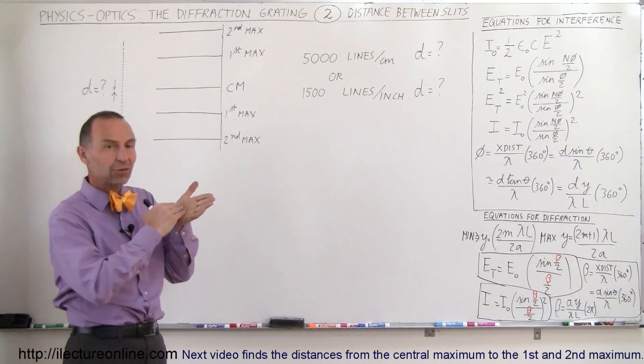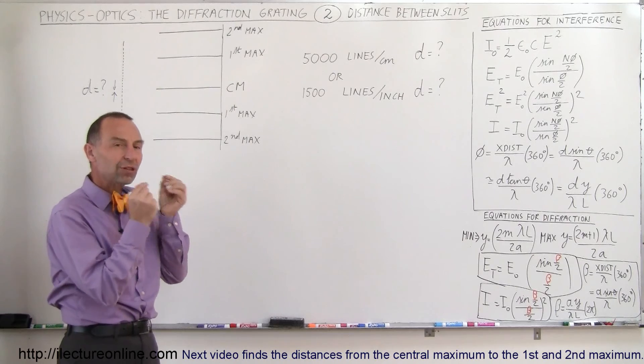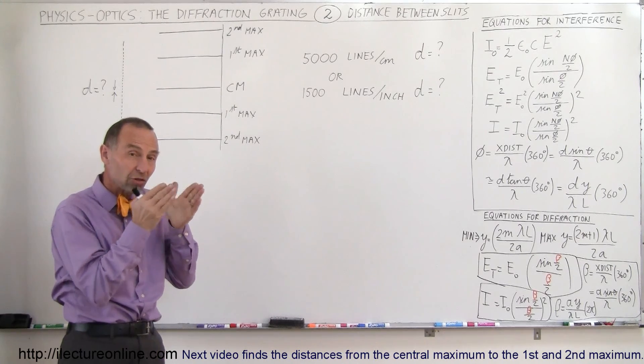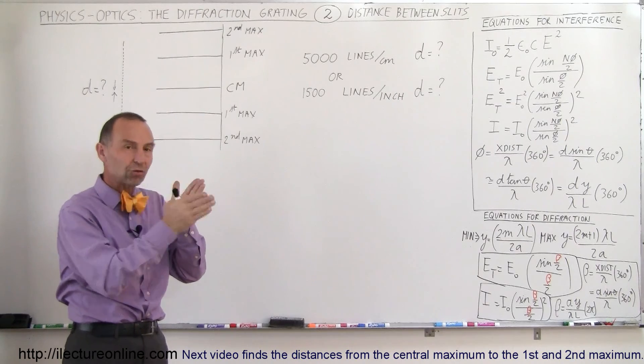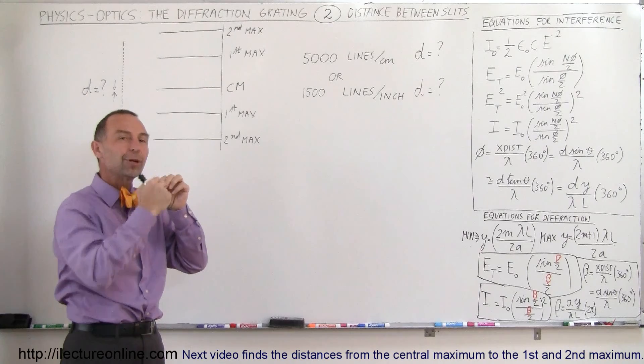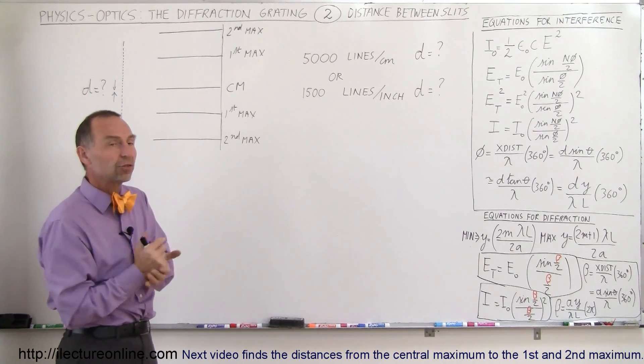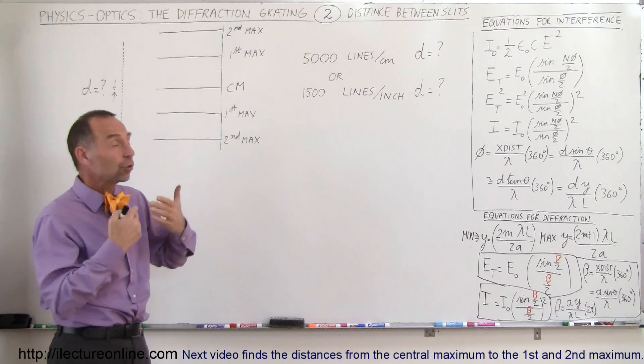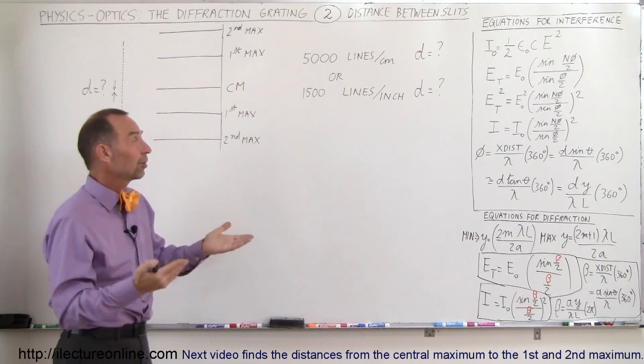So they take a piece of plastic or glass and they scratch very minute little scratches in them which gives the effect of making small little slits. The in-between portions that are not scratched up, the light can actually traverse through that and so the scratches actually separate one slit from another. But typically they draw a certain number of scratches per inch or certain amount of scratches per centimeter and those are then expressed in terms of, let's say, 5,000 lines per centimeter or 1,500 lines per inch.